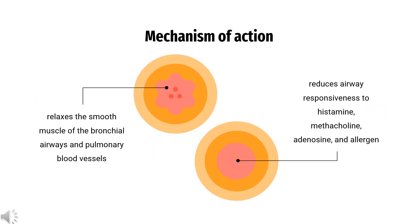How does theophylline work? Theophylline relaxes the smooth muscle of the bronchial airways and pulmonary blood vessels and reduces airway responsiveness to histamine, methacholine, adenosine, and allergen. Theophylline competitively inhibits type 3 and type 4 phosphodiesterase (PDE), the enzyme responsible for breaking down cyclic AMP in smooth muscle cells, possibly resulting in bronchodilation.